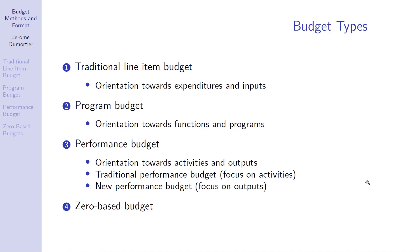In this video we are going to look at four different budget types. First, traditional line-item budgets focused on expenditures and inputs. Second, program budgets organized around functions and programs — the federal government is centered around functions. Third, performance budgets oriented towards activities and outputs, including both the traditional performance budget focused on activities and the new performance budget focused on outcomes. Fourth, zero-based budgets, where the budget is newly constructed every year.